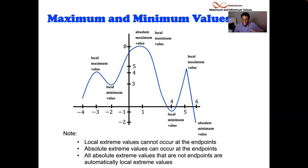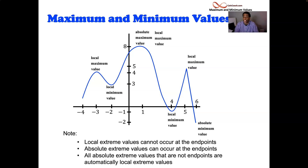So now we've got all the definitions out of the way and we have a good graph — we understand what's going on. All we want to do is find out what we need to do to find these values. If I have a graph I can find it, but what if I just have a function? Let's take a look at that in the next video. Thank you for watching. My name is Nakaya Rimmer — stay tuned for the next video, and the link will be down in the description.